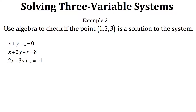In example two, we use algebra to check whether our solution is correct by plugging x equals one, y equals two, and z equals three into each equation. For the first equation, x plus y minus z equals zero: one plus two minus three equals zero. One plus two is three, and three minus three is zero. Our solution checks out with the first equation.